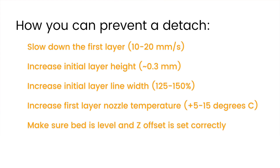Next, make sure your bed is level and that your Z offset is set correctly, so your first layer prints with just a little bit of squish but not too much. I would highly recommend investing in an auto leveling system for your 3D printer if you don't already have one — it's super helpful and gets you level beds without having to think about it.